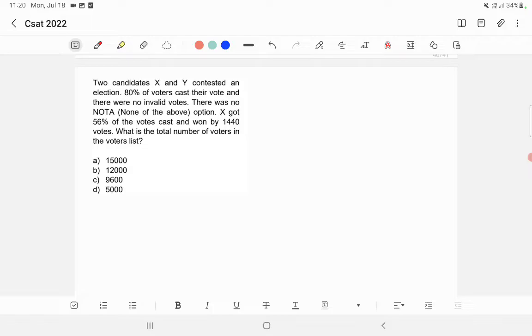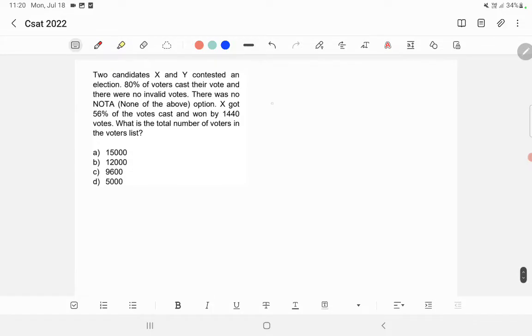So here in the total number of votes cast, 56% of the vote is won by X and Y got 44% of the vote because the balance is 44%. If X got 56% then Y will be getting, because two candidates are contesting the election, Y got 44% of the vote because there were no invalid votes. So all the votes are counted. Whatever votes are casted, all the votes are counted. So we can directly take 44% of the vote received by Y.